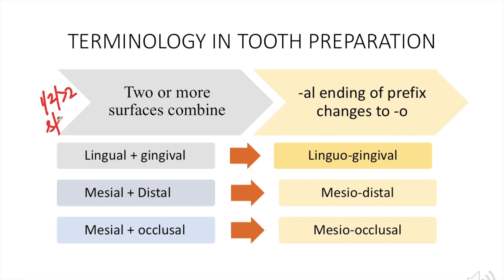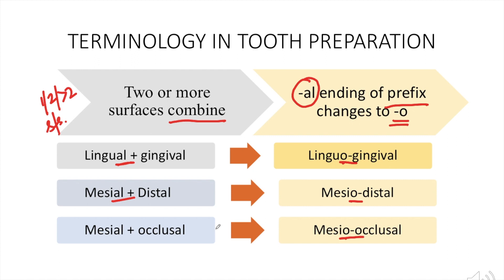When we need to combine and name two or more surfaces, there is one rule: the '-al' word ending or prefix is replaced by '-o'. For example, lingual plus gingival — the '-al' of lingual is converted to '-o', giving linguo-gingival. Similarly, mesial plus distal gives mesio-distal, and mesial plus occlusal gives mesio-occlusal.